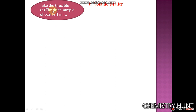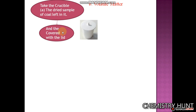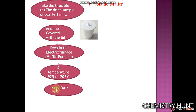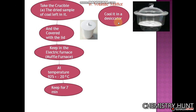For volatile matter, take the same crucible A which we used for moisture, with the same coal sample remaining in it. Cover the crucible with a lid. After that, keep the crucible in the electric muffle furnace at a temperature of 925 plus or minus 20 degrees Celsius, and keep it there for seven minutes.